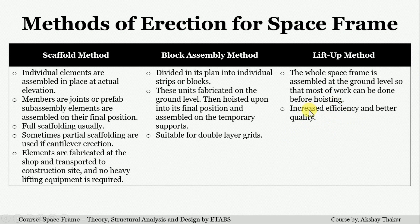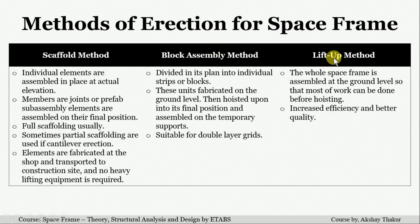Because the whole space frame is assembled at the ground level, better quality of work can be achieved. Since the whole space frame is lifted only one time, the efficiency of work is also increased. These are the three methods of erecting the space frame: the scaffold method, the block assembly method, and the lift up method.